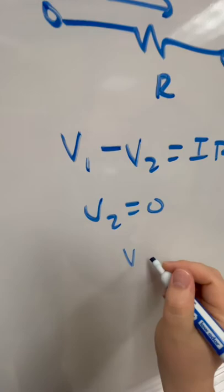If V2 is equal to zero or ground, then I could say the voltage across there V1 minus zero is equal to I times R.